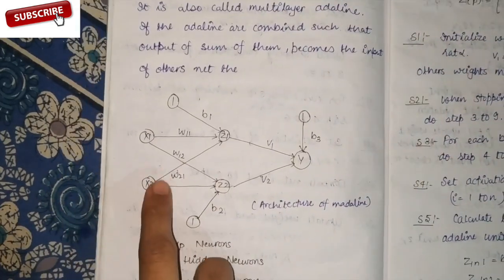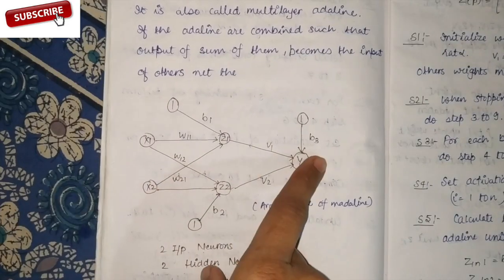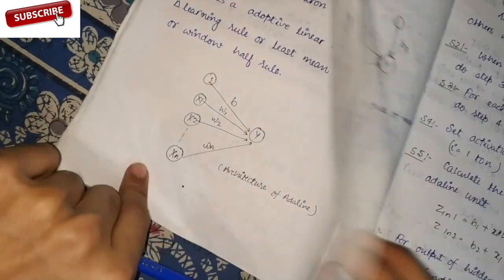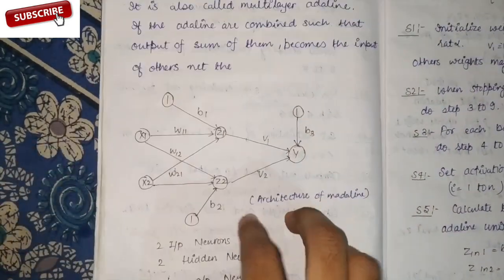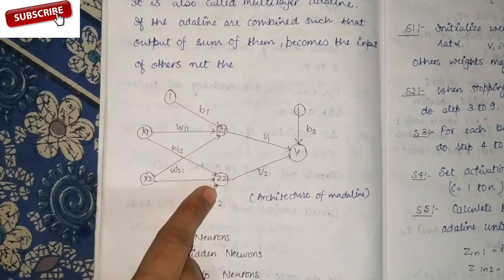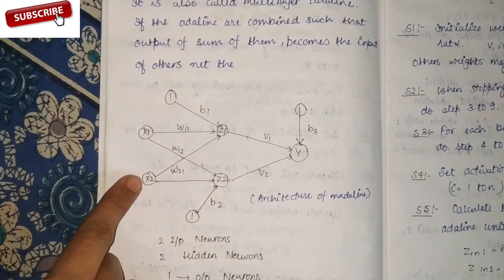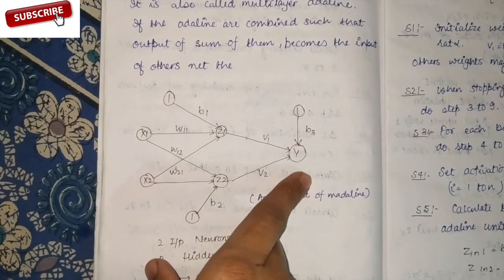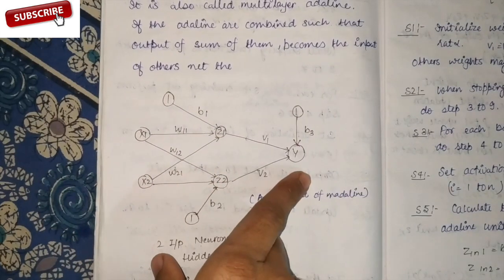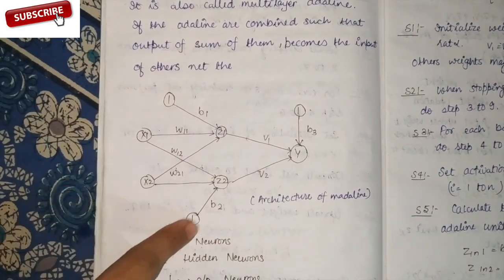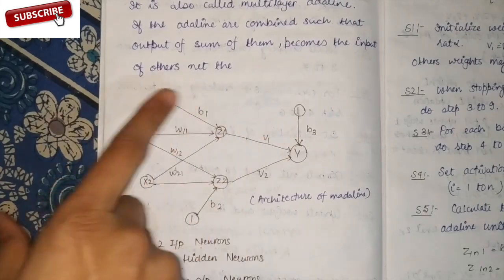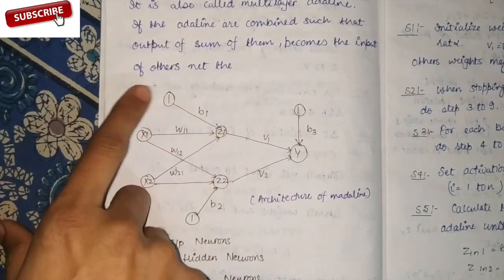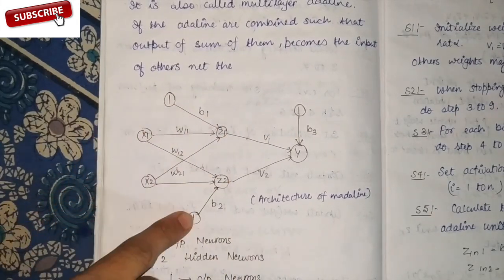Just like you can see here: this is the input layer, and this is the output layer — same as before. And now we have a hidden layer. X1 and X2 are the input layer. Z1 and Z2 are the hidden layer, and Y is the output layer. These three 1s are all biases: B1, B2, and B3.